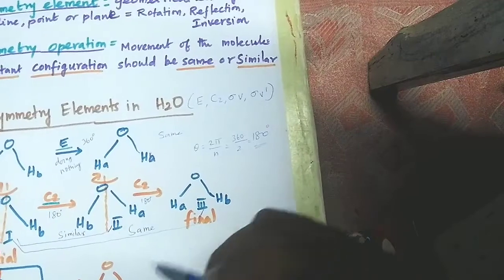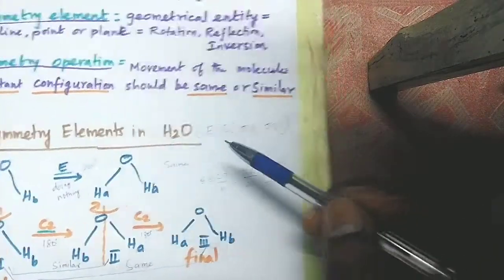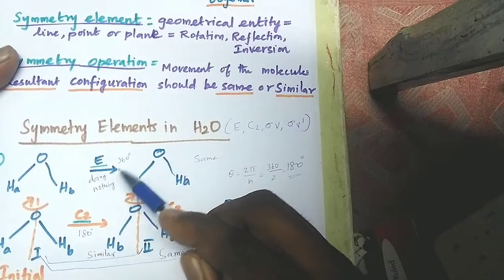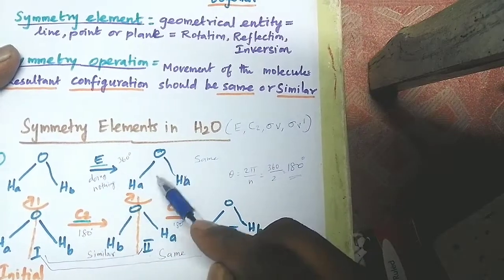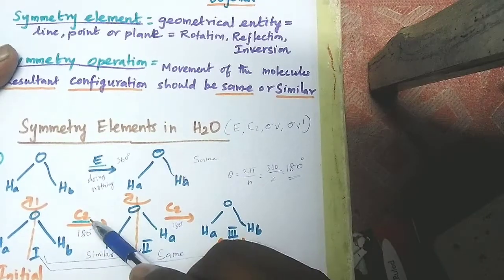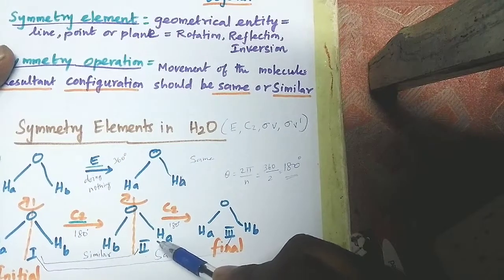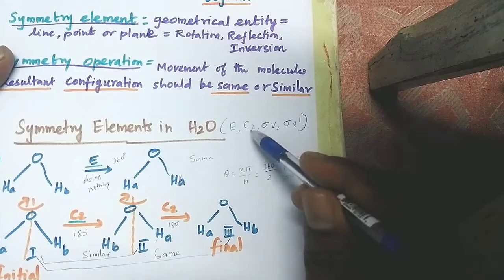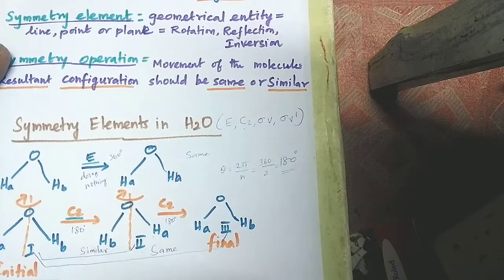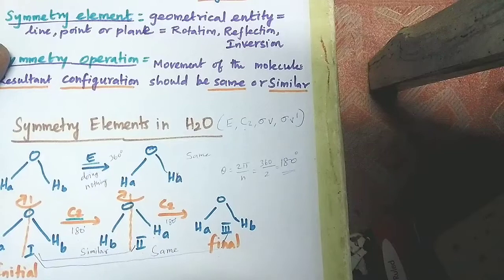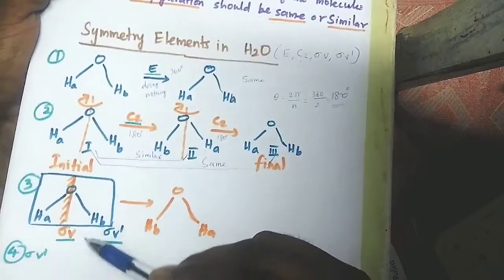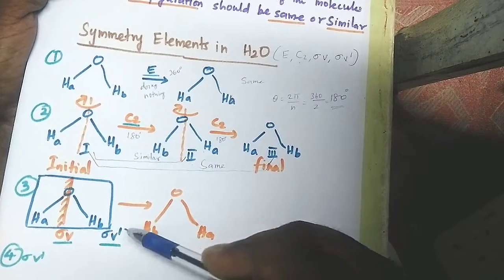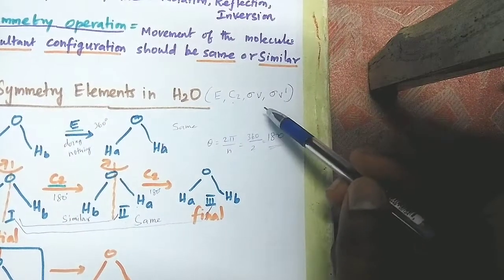These are the symmetry elements present in water molecule: E, C2, sigma V, and sigma V prime. E is doing nothing or 360 degree rotation — present in water molecule. C2 operation gives a similar configuration, and doing C2 twice gives the same configuration. Sigma V is the imaginary vertical plane dividing the molecule into two halves so that one half is the exact mirror image of the other, and sigma V prime is also present. These are all the symmetry elements present in water molecule.